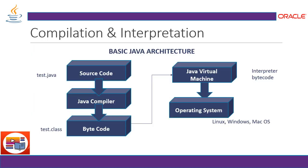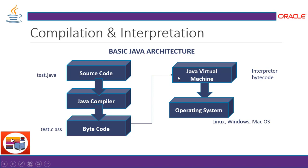Let's see the Java architecture and how it works. First, source code is written in a .java file — a sequence of instructions written in the Java language. That Java code goes to the compiler, which converts the .java file into a .class file — the bytecode.